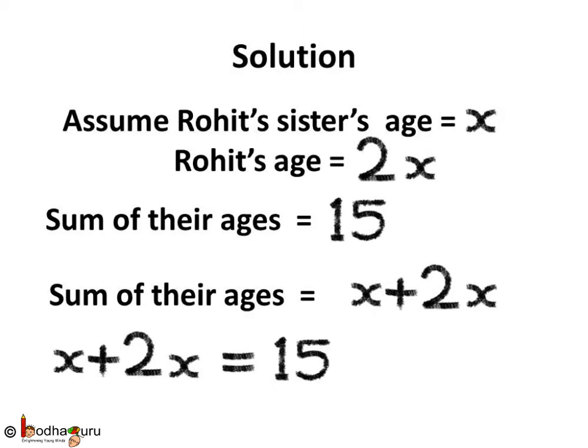Now we also know that the sum of their ages is equal to 15. We have assumed Rohit's sister's age is x and Rohit's age is 2x. It means the sum of their ages is also equal to x plus 2x, as both of these represent the same thing — that is, the sum of their ages. So we can say x plus 2x is equal to 15.